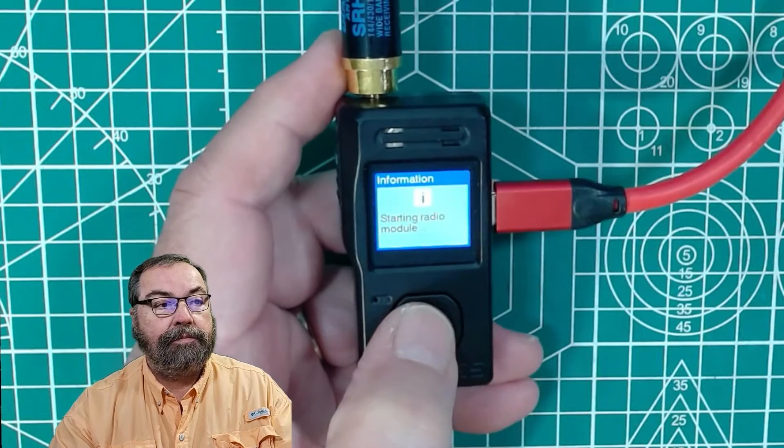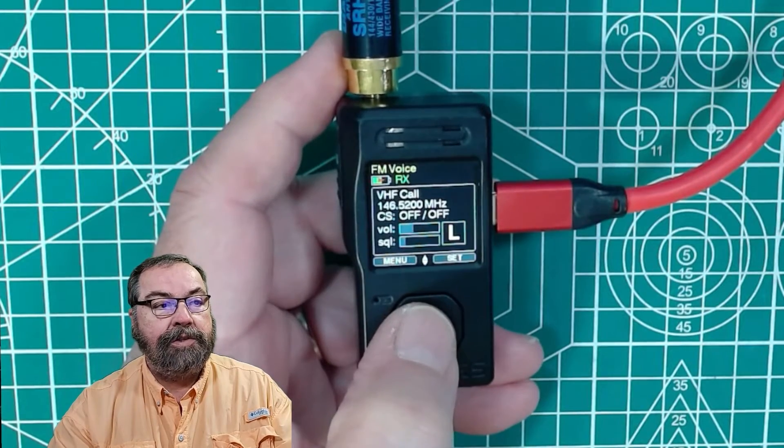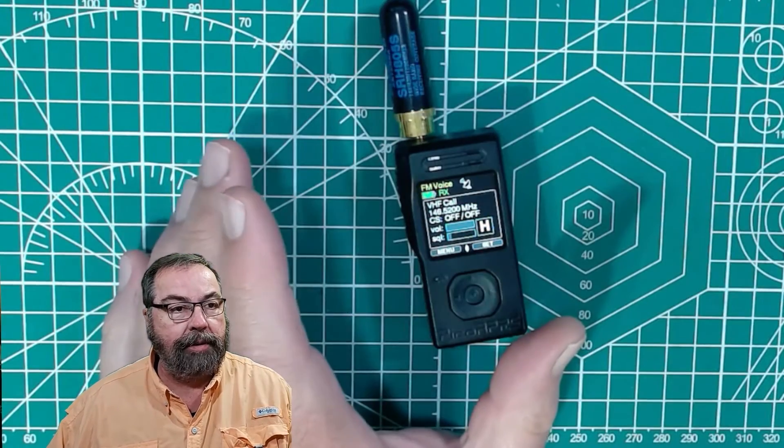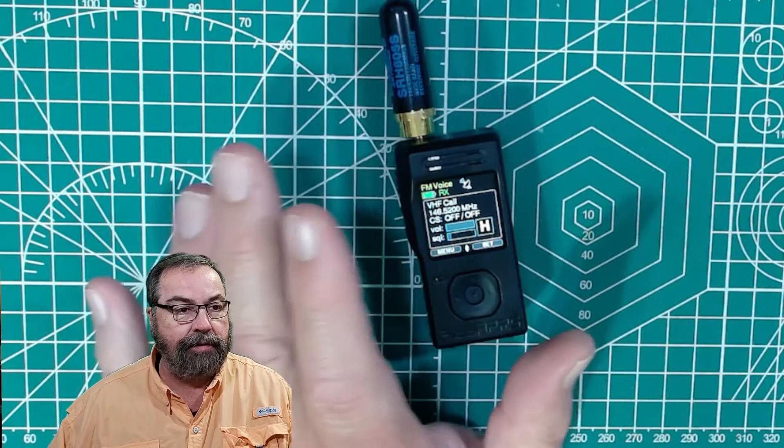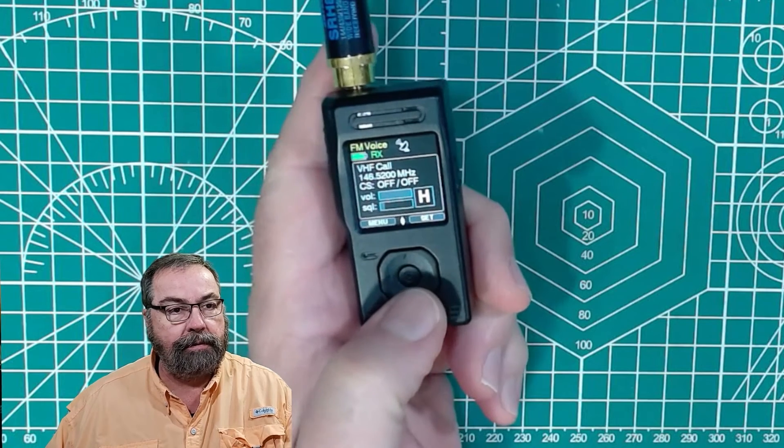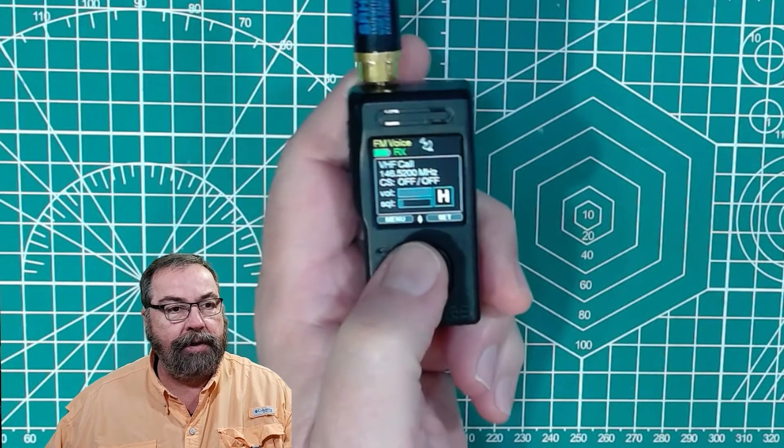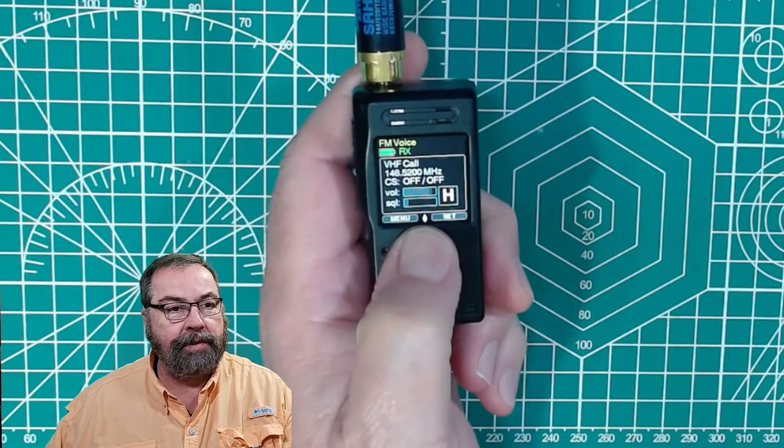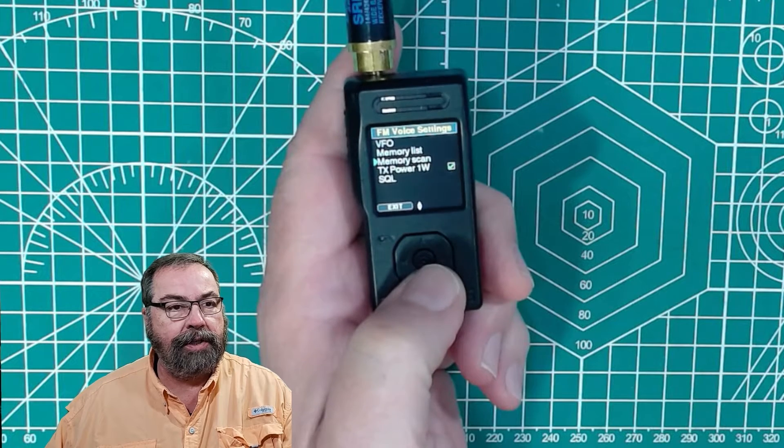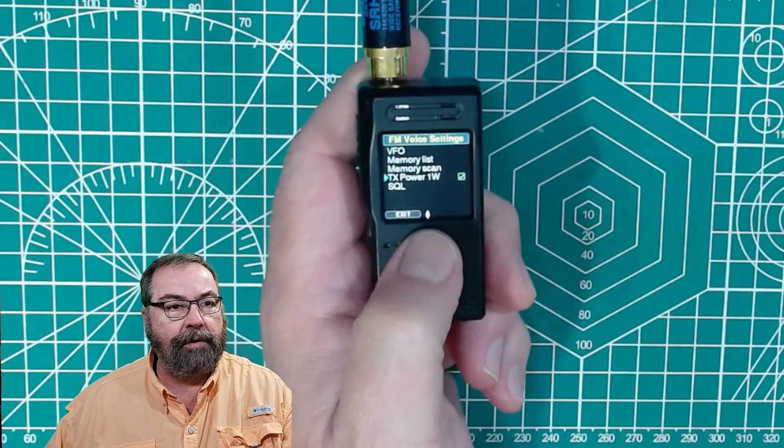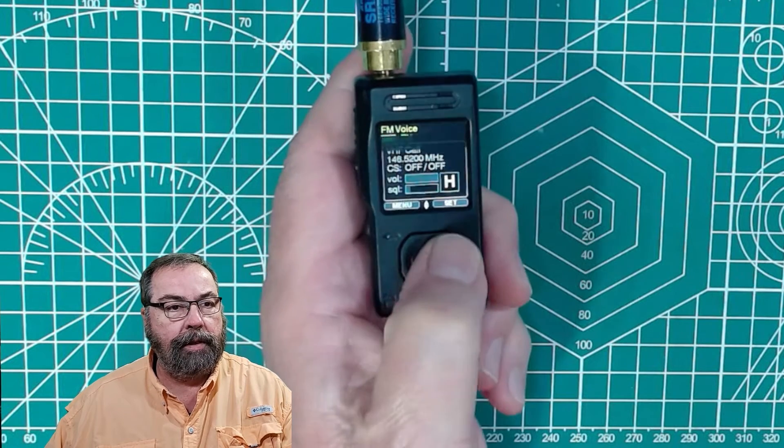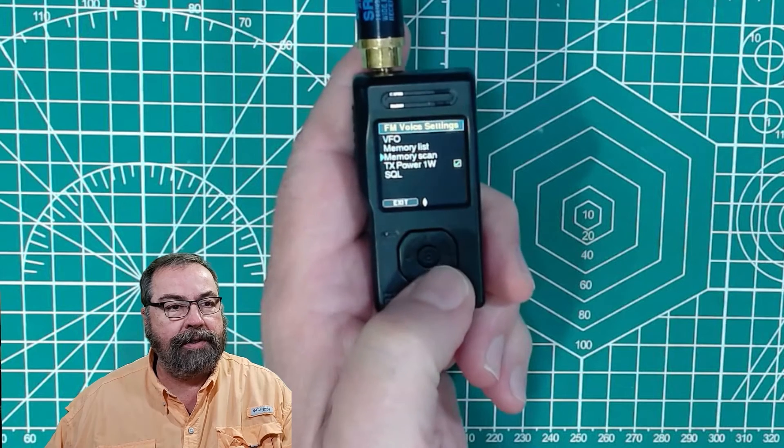Let's jump over to FM voice. It's going to tell us it's starting the radio module. You can see we're on 146.52. I want to do a quick demo of the VHF transceiver function. The device has the four-way dongle here, dingus, and volume up and volume down is achieved by that. If we go to set over here on the right side, we can change our power. We can also look at our saved channels that way.